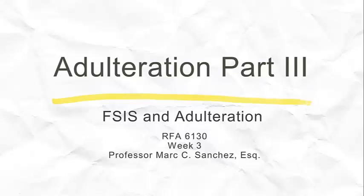In this third and final component for week three, we're going to take a look at what we've learned about adulteration from the FDA side and compare it to what we see the Food Safety Inspection Service of the USDA define and enforce their term of adulteration, remembering that we're coming from two different enabling statutes when we talk about the USDA — we're not under the Food and Drug and Cosmetic Act. So we'll see how we define adulteration for meat products and how we enforce those, and how that compares.